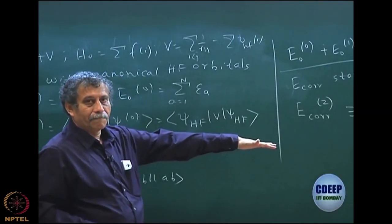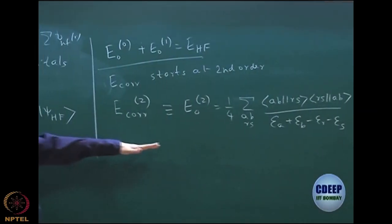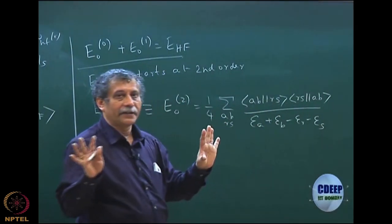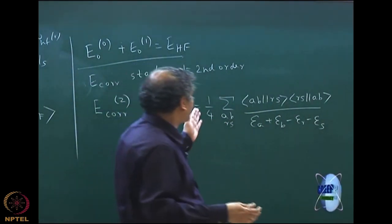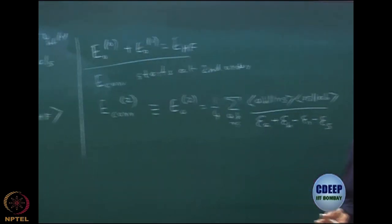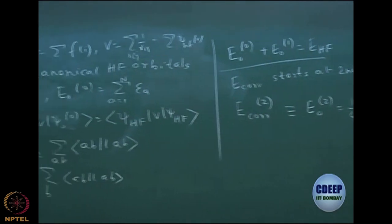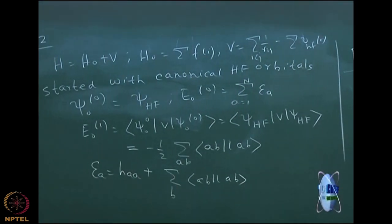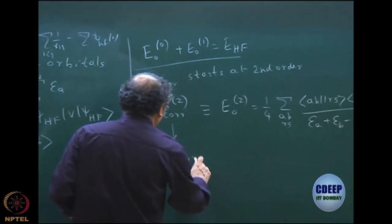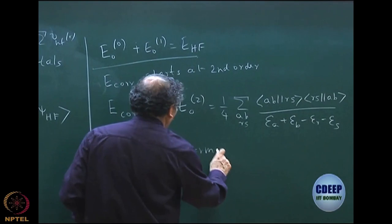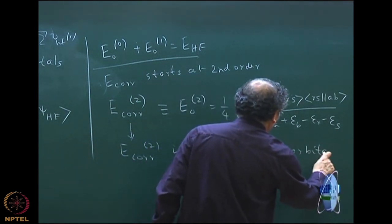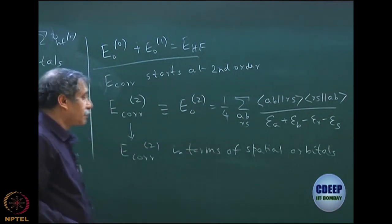The homework essentially starts from here — please give it on Monday. You have to write the antisymmetrized integrals in regular integrals and write an expression. See which terms are equal, use symmetry to simplify — not just expand in one line as AB RS minus AB SR times RS AB — but simplify in terms of regular integrals, still in spin orbitals, then do spin integration to eventually express the correlation energy in terms of spatial orbitals for both occupied and virtual orbitals.